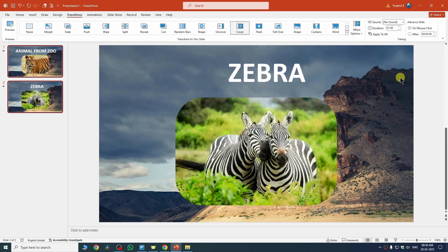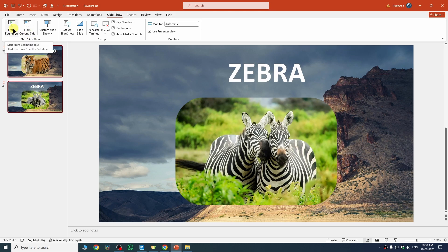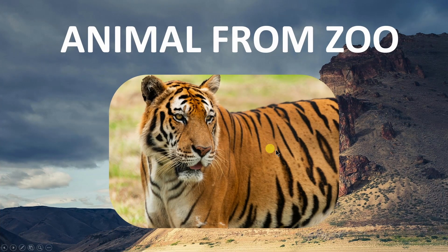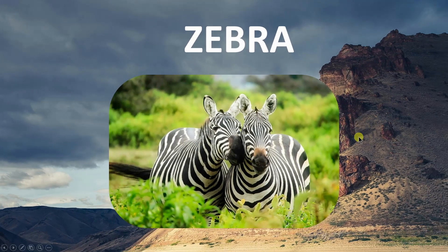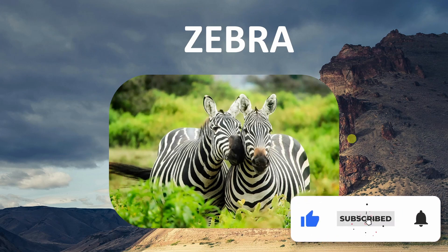To preview your slideshow, go to the Slideshow tab and choose 'From Beginning' or 'From Current Slide'. I'll select From Beginning and the slides will load in slideshow mode. Click anywhere to advance to the next slide. This is the complete process to create a slideshow in PowerPoint.